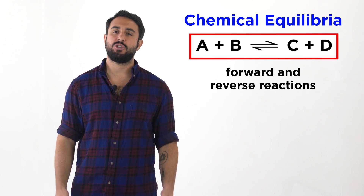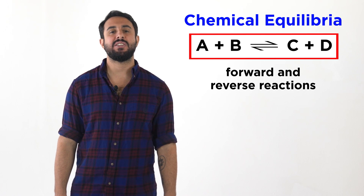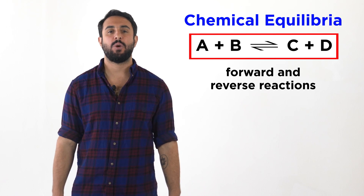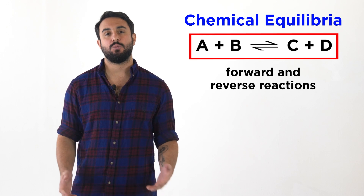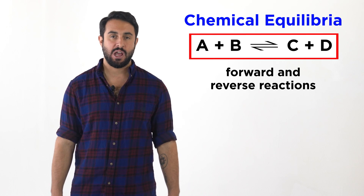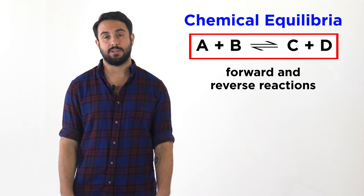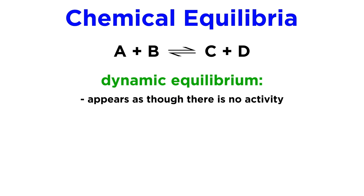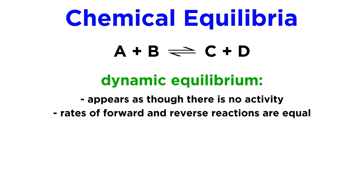But many systems do not operate like this. There exist chemical equilibria, in which there is a forward reaction and a reverse reaction, and both are happening constantly. In such a dynamic equilibrium, it appears that there is no activity, but it is only because the rates of the forward and reverse reactions are the same, so it seems as though nothing is changing.